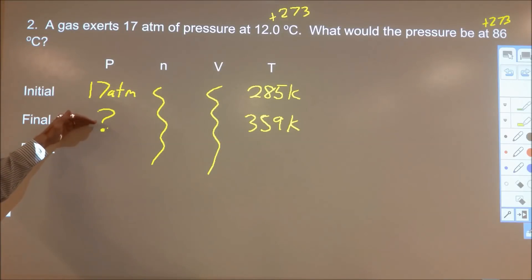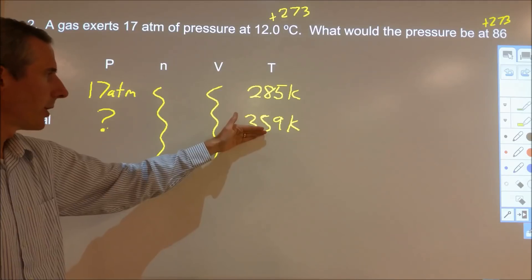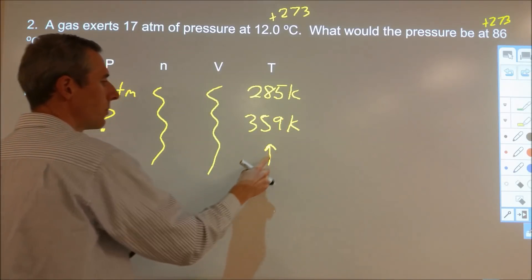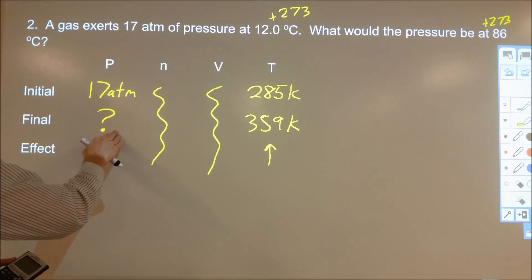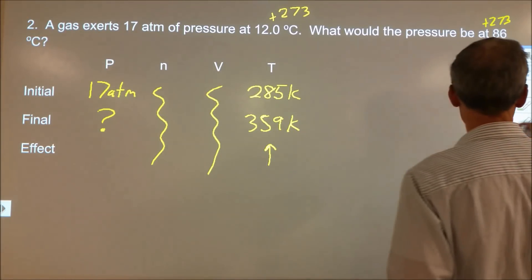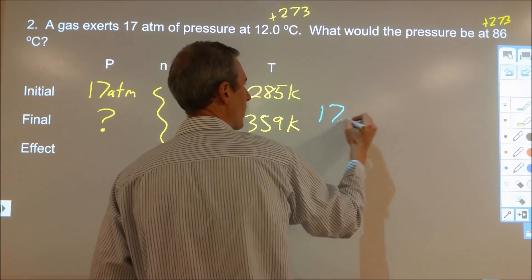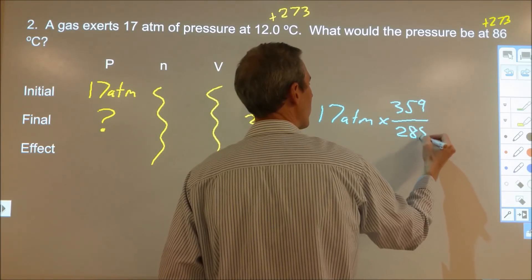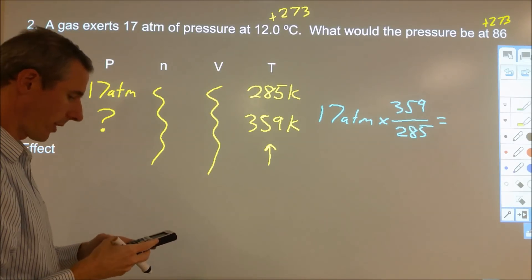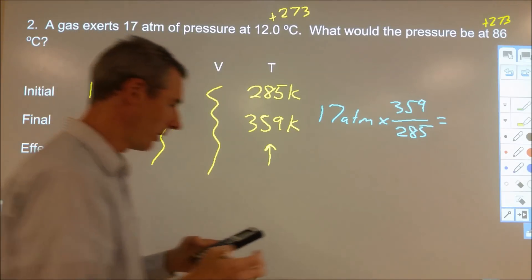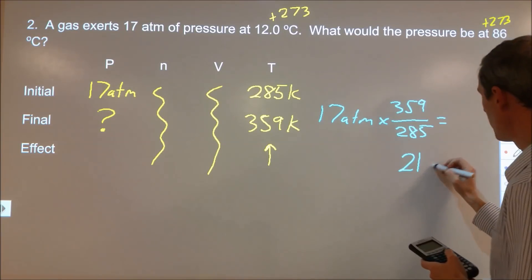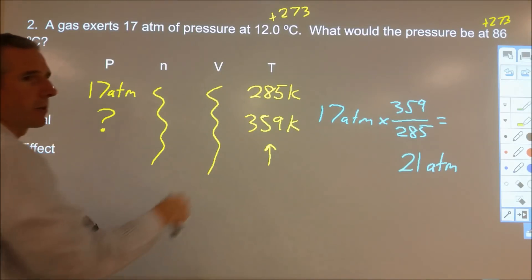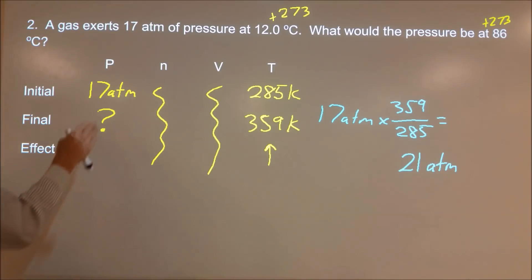Temperature and pressure are directly proportional. The temperature is increasing, so the pressure should also go up. We know 17 atmospheres is going to increase by the same proportion as the temperature — the ratio of 359 to 285. So we calculate 17 times 359 divided by 285, giving us 21.4, so about 21 atmospheres. That makes sense: we went from lower to higher pressure when temperature increased, because faster particles give more and bigger collisions, therefore the pressure goes up.